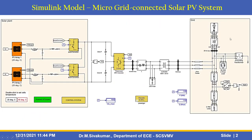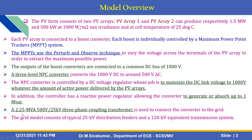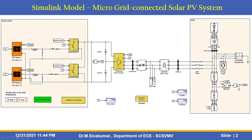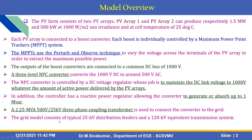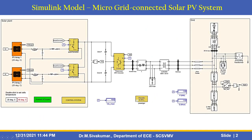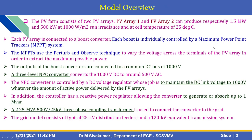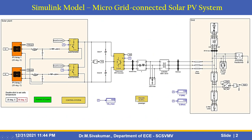A 2.25 MVA, 500 V / 25 kV three-phase coupling transformer is used to connect the converter to the grid. The grid model consists of a typical 25 kV distribution feeder and a 120 kV equivalent transmission system, and a 2 MW load. This is the Simulink model for the microgrid connected solar PV system.